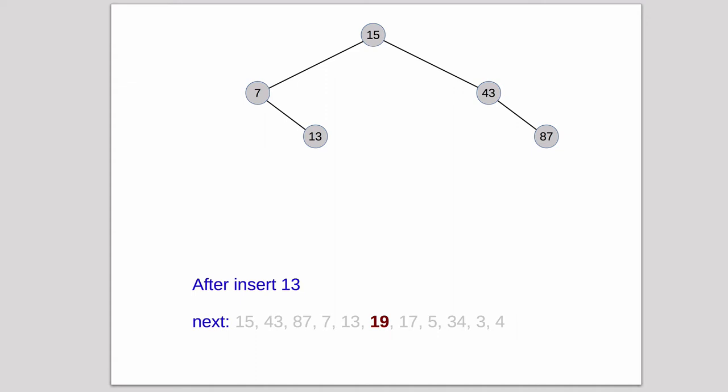Let's keep going. 19 will go to the right of 15 but to the left of 43. 17 will go down to the right of 15, to the left of 43, and to the left of 19. 5 will have to go to the left, but it's less than 7, so it's going to be put to the left of 7. 34, we'll follow that. It's greater than 15, less than 43, greater than 19, so it's going to be put to the right of 19. And then 3 will follow all the way down to the 5 node, put to the left of 5. And 4 will follow all the way down to the 3 node and then put in to the right of 3. And there we go. That's the complete tree.